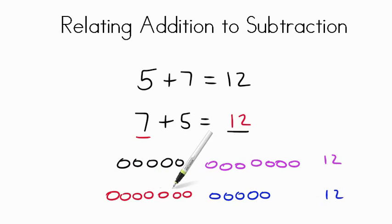All we did was move the counters around. We just moved the numbers around. It's the same amount it's just that the numbers have changed their places five and seven versus seven and five.